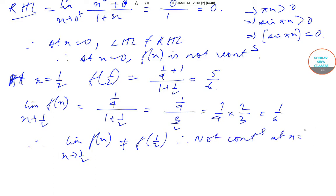From checking all the options, option b is the correct answer. Today we have solved question number 11 from the IIT JAM Mathematical Statistics question paper of year 2018. We will be solving the next questions in the subsequent videos. Till then keep watching Sorbs' classes videos for more solutions and content. Thank you very much.